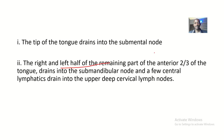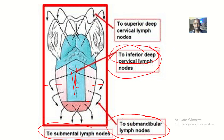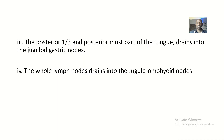The right and left halves of the remaining anterior two-thirds of the tongue drain into the submandibular nodes. A few central lymphatics drain into the upper cervical lymph nodes. You should draw this image — it makes it fun to learn.